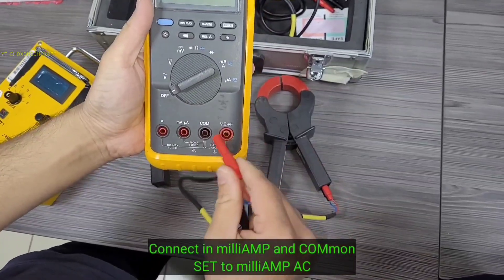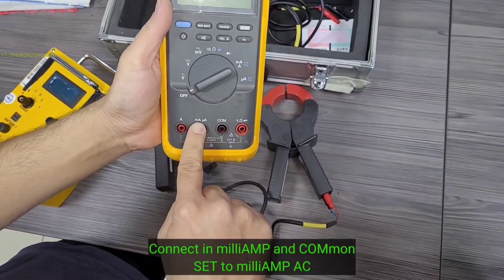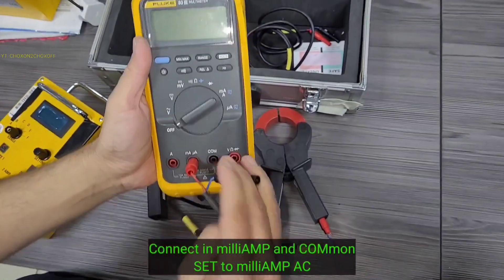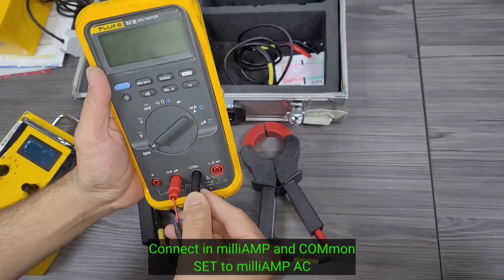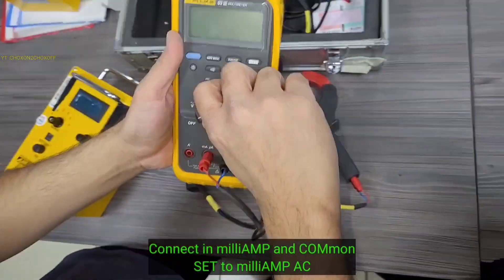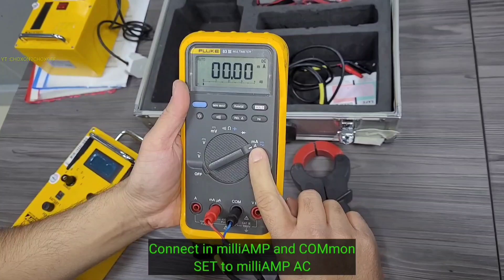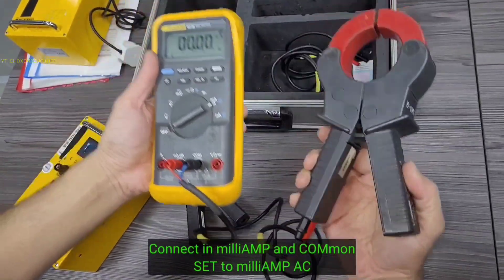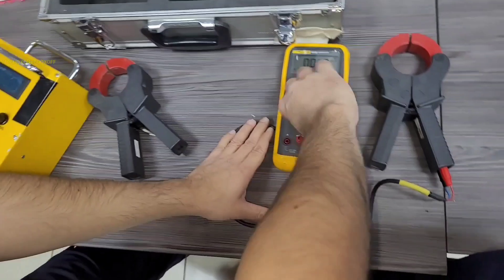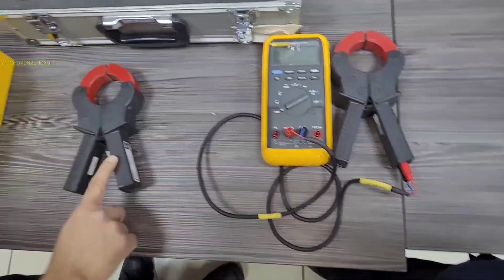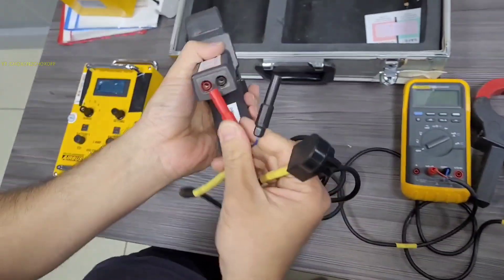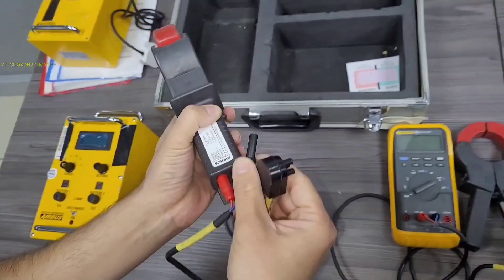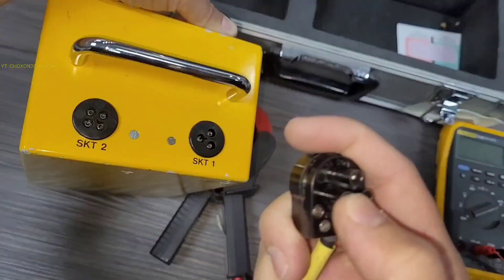So this will go here in the current clamp. Normal level, so this will go in milliamps and this will go in common. While doing the test you have to keep it on milliamps. So this pair is ready. This will go over here, this will go over here.